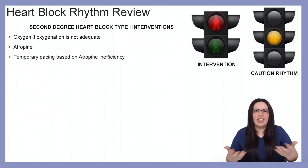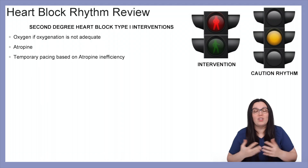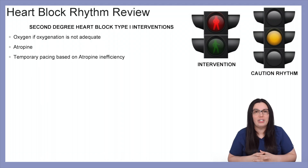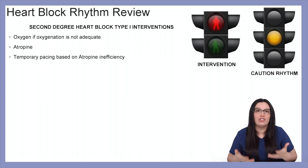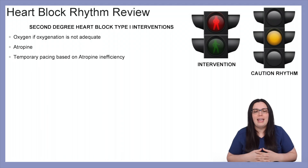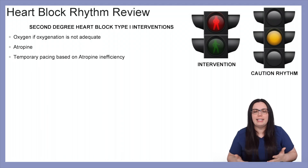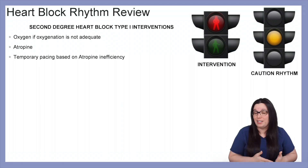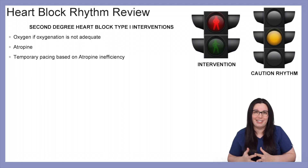Interventions with our second degree type 1 heart block: oxygenation is always an option if oxygenation is inadequate. We use atropine if we have a slowing of the heart rate, and we might even consider temporary pacing based on whether atropine is effective or not.